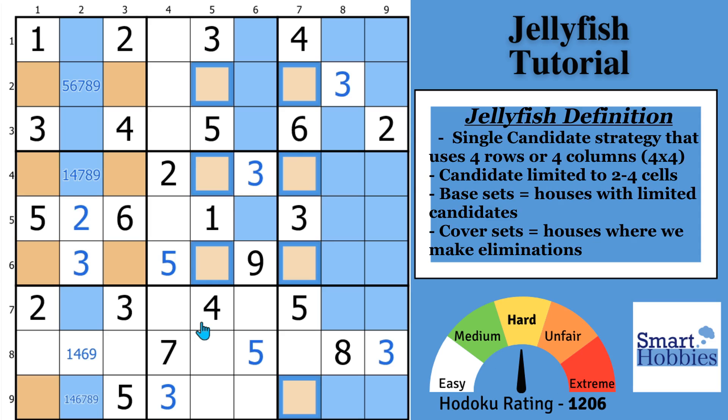Alright, so the definition here is that in 4 columns, such that at most 4 cells are occupied in the same rows by a candidate, you have a jellyfish. And where the restricted cells are, this is called our base set. So the columns 1, 3, 5, and 7 are our base sets.